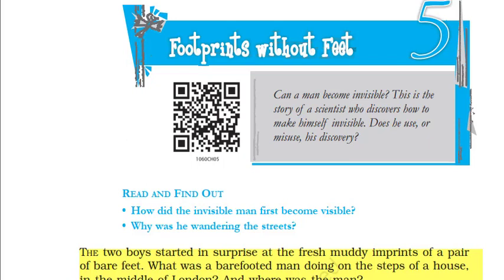This story is about a scientist who discovers how to make himself invisible. As he was afraid of being discovered in London where he had committed some crimes, he runs away to a remote village. However, he runs out of money and resorts to robbery using his advantage of invisibility.